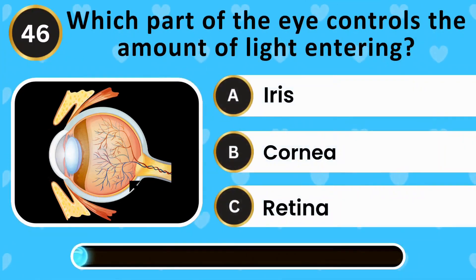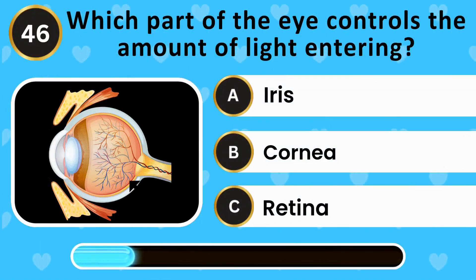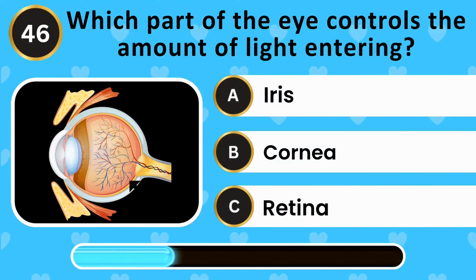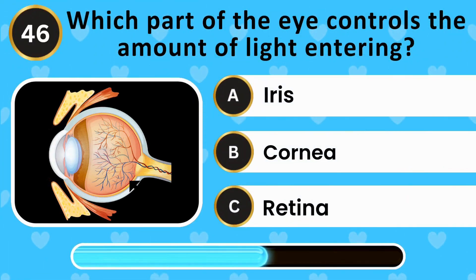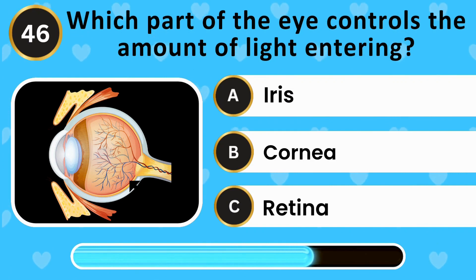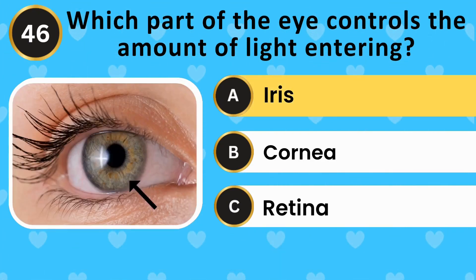Which part of the eye controls the amount of light entering? Iris, cornea, retina. The answer is iris.